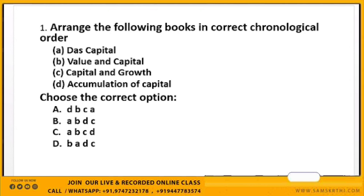So the first book is Das Capital, 1867 — option A. Second is Value and Capital, J.R. Hicks, 1939. Then Accumulation of Capital, 1956. Then Capital and Growth, 1965. This is the correct chronological order. The answer is option B.